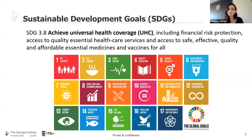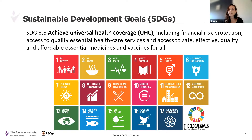I start by going right back to the sustainable development goals — 17 goals set by the United Nations, of which goal number three particularly relates to health. Each of these goals has sub-goals, and goal 3.8 is specifically related to the achievement of universal health coverage, which means that every country aspiring towards these goals looks to provide their population with financial risk protection and access to quality, safe, and essential healthcare services, medicines, and vaccines.